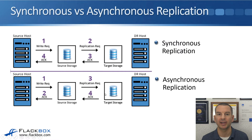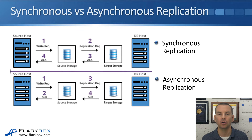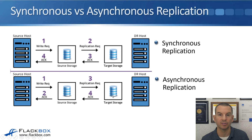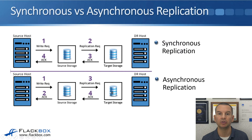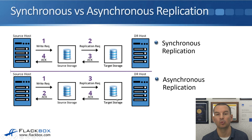If you design the solution with a reasonable delay between the source and target storage systems, it is perfectly feasible for the source to be in London and the target on the other side of the world in Sydney. You still have your data in two different locations — you just have a bit of a delay between it reaching the source and reaching the target, whereas with synchronous replication there's no delay between the two.